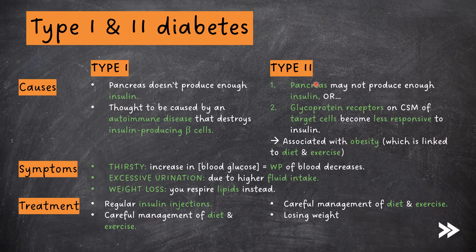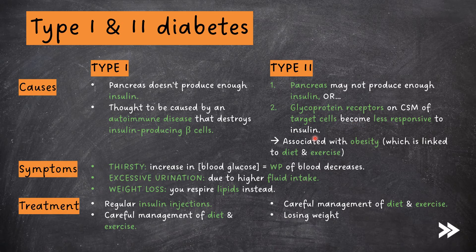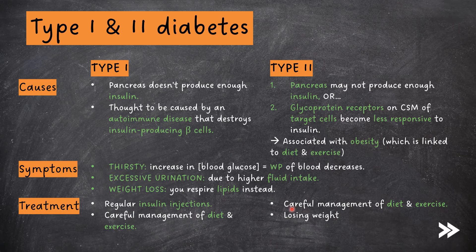Type 2 diabetes may be caused either because the pancreas does not produce enough insulin, or because glycoprotein receptors on the cell surface membrane of target cells become less responsive to insulin. Type 2 diabetes is associated with obesity, which is linked to diet and exercise. The symptoms are the same as those for type 1; however, treatment involves management of diet and exercise and/or losing weight.